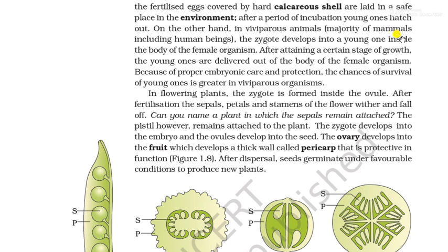The majority of mammals, including human beings, are viviparous animals, in which the zygote and embryo develop inside the mother's body. The zygote develops into a young one inside the body of the female organism, and after attaining a certain stage of growth, the young one is delivered. Because of proper embryonic care and protection, the chance of survival of the young one is greater in viviparous animals.